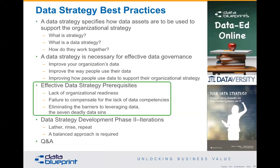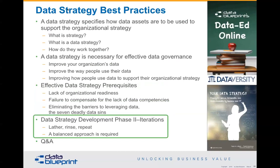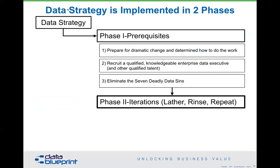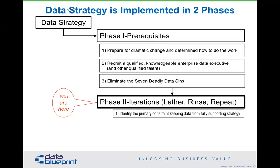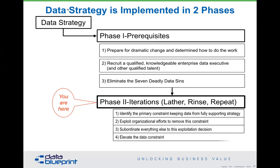So it's a lack of organizational readiness, a failure to compensate for the lack of data competencies in the organization, and failure to remove those barriers — that will keep you from cyclically going through project-based work guided by a program that allows the organization to better achieve its data goals. Assuming you're right here in phase two — you've eliminated the prerequisites, prepared for dramatic change, got a qualified data exec (rented or grown yourself), and eliminated the seven deadly sins — the next part is built from the theory of constraints. Identify the primary constraint keeping data from fully supporting strategy; exploit organizational efforts to remove that constraint; subordinate everything else to this; alleviate the data constraint; and repeat.